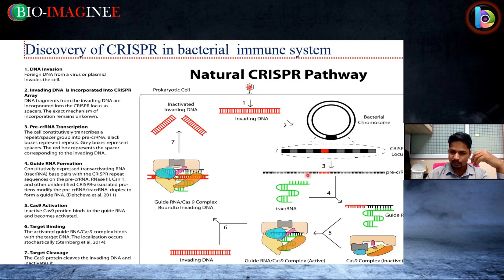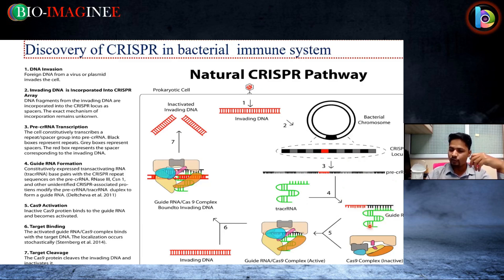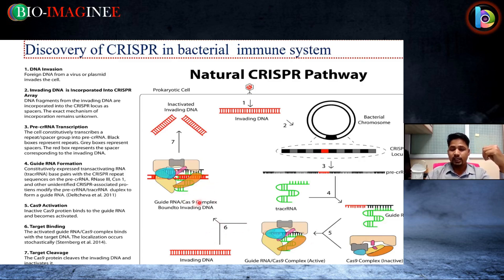At the CRISPR locus, there are certain spacer sequences which we call pre-CRISPR RNA. Following this, guide RNA will form and attach with tracer RNA — the activating RNA. In that form, it creates a single guide RNA which binds with the Cas9 complex, which is inactive before this. After binding with the guide RNA, it becomes active, and this guide RNA–Cas9 complex then inactivates the invading DNA.